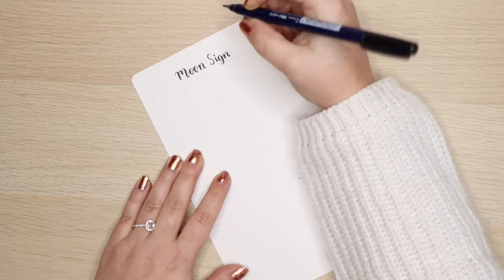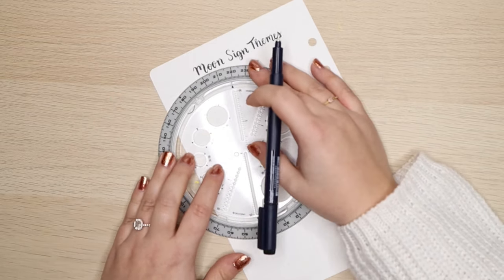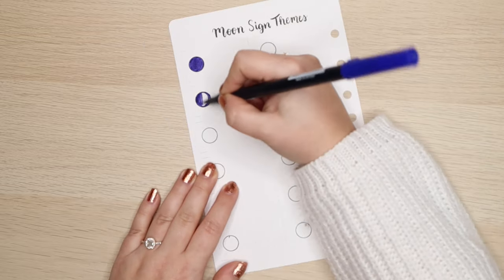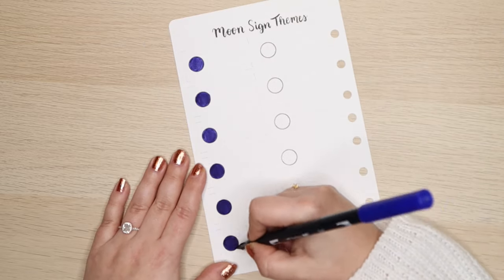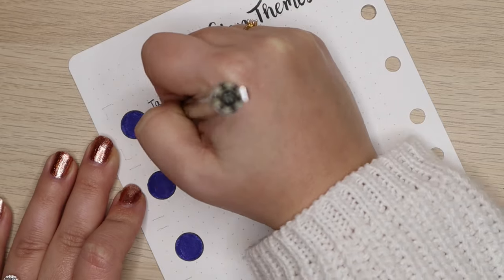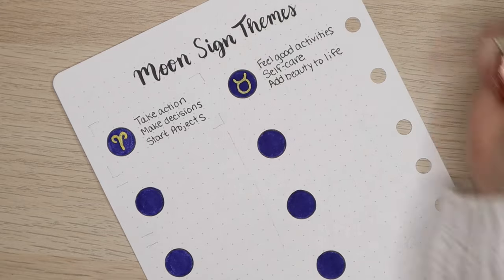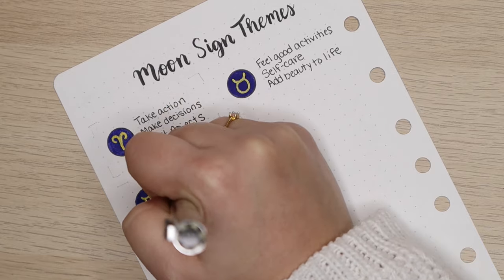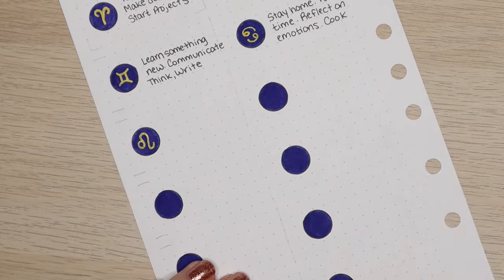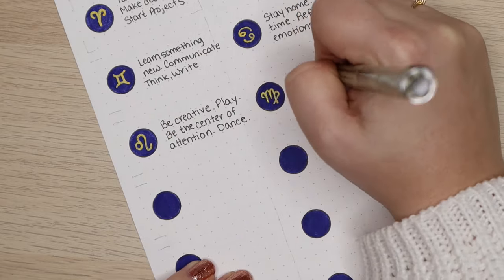Next we have reached our penultimate spread. I recently learned what that word means and I try to work it in wherever possible. And that is our moon sign themes. While I don't think this spread is very practical in our modern day world, I do find it very interesting. I'm taking this information directly out of my moon journal. The moon transits between signs every two to three days and the moon affects our habits and our moods. And each sign that the moon moves through has a different type of energy. So if you wanted to, you could use the energy of each moon sign to plan out your day.